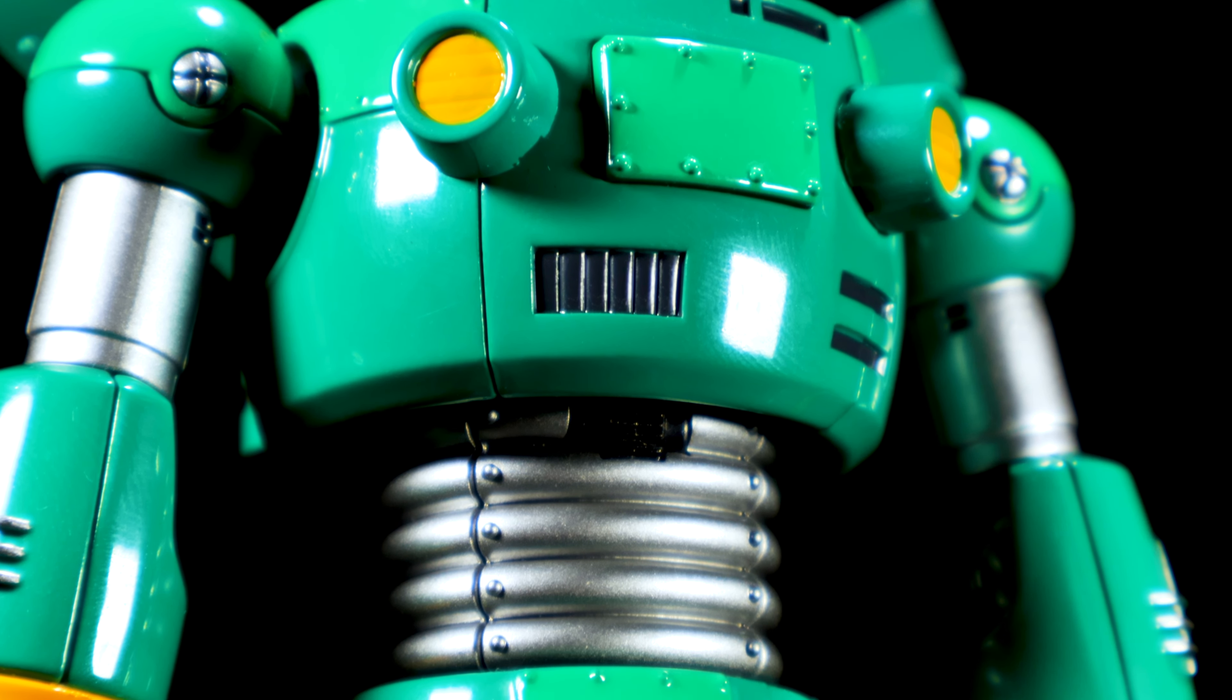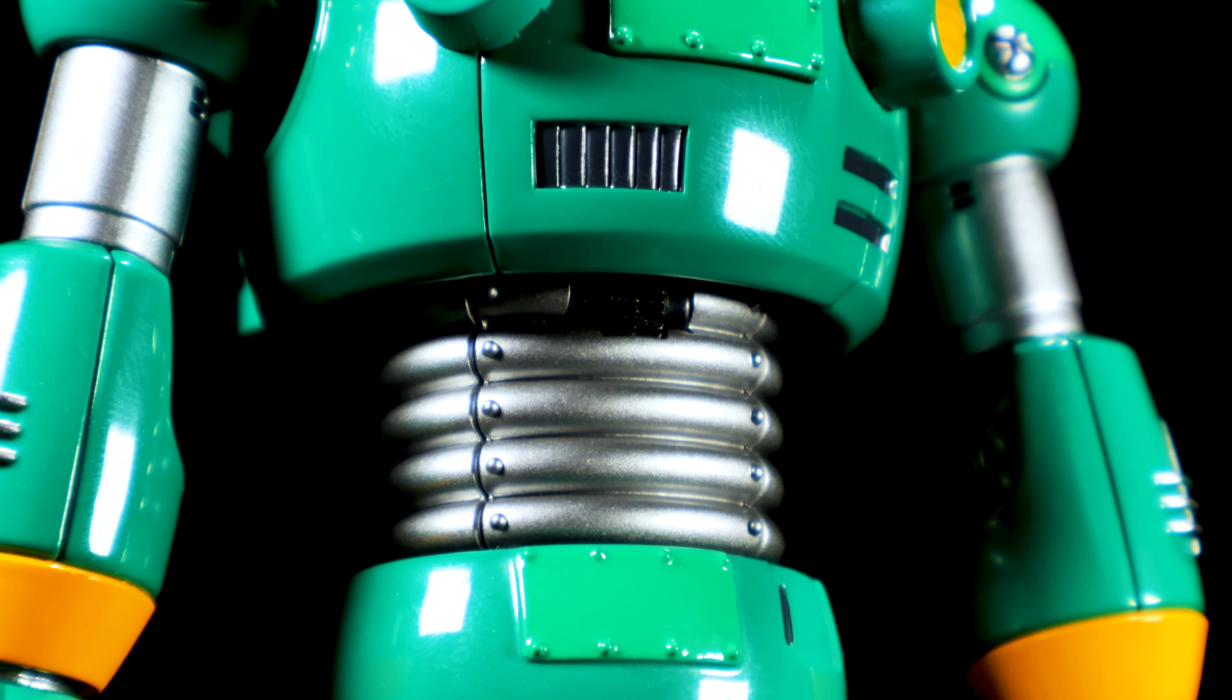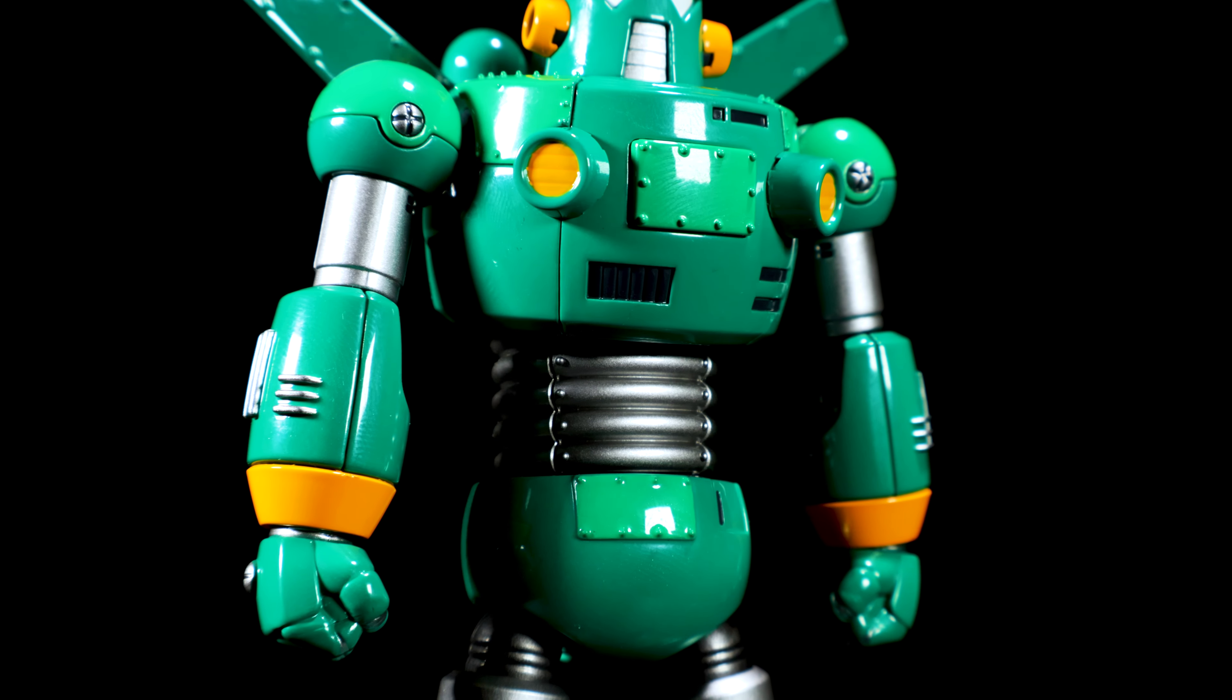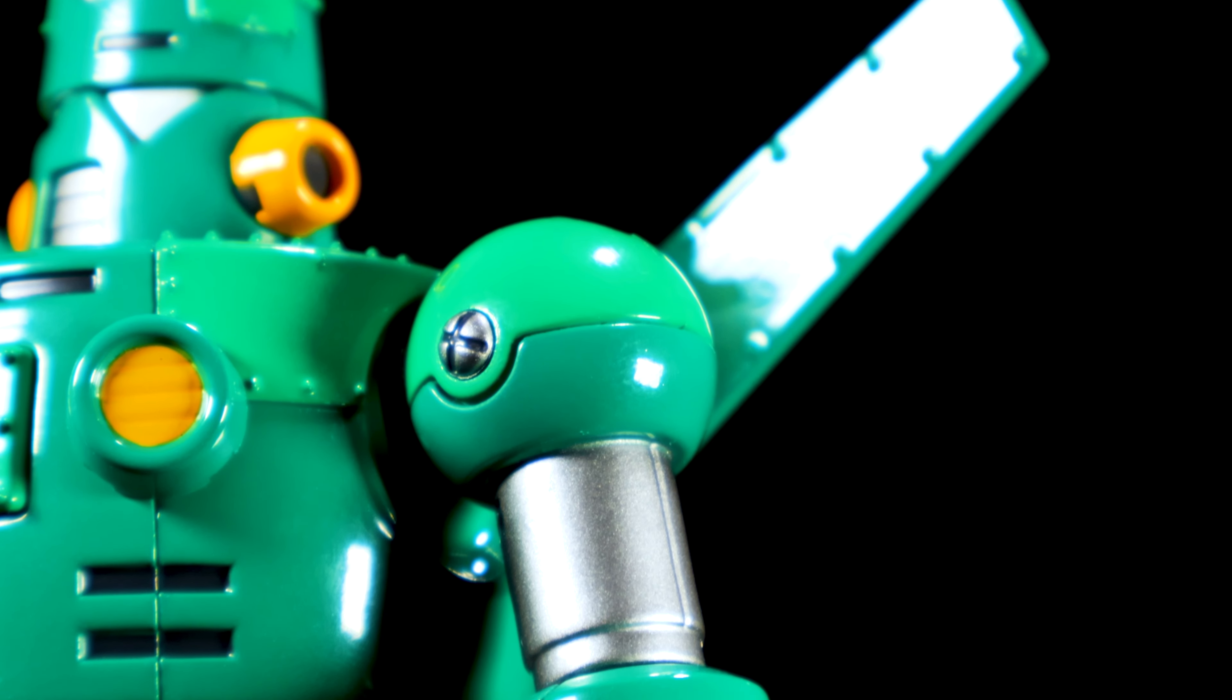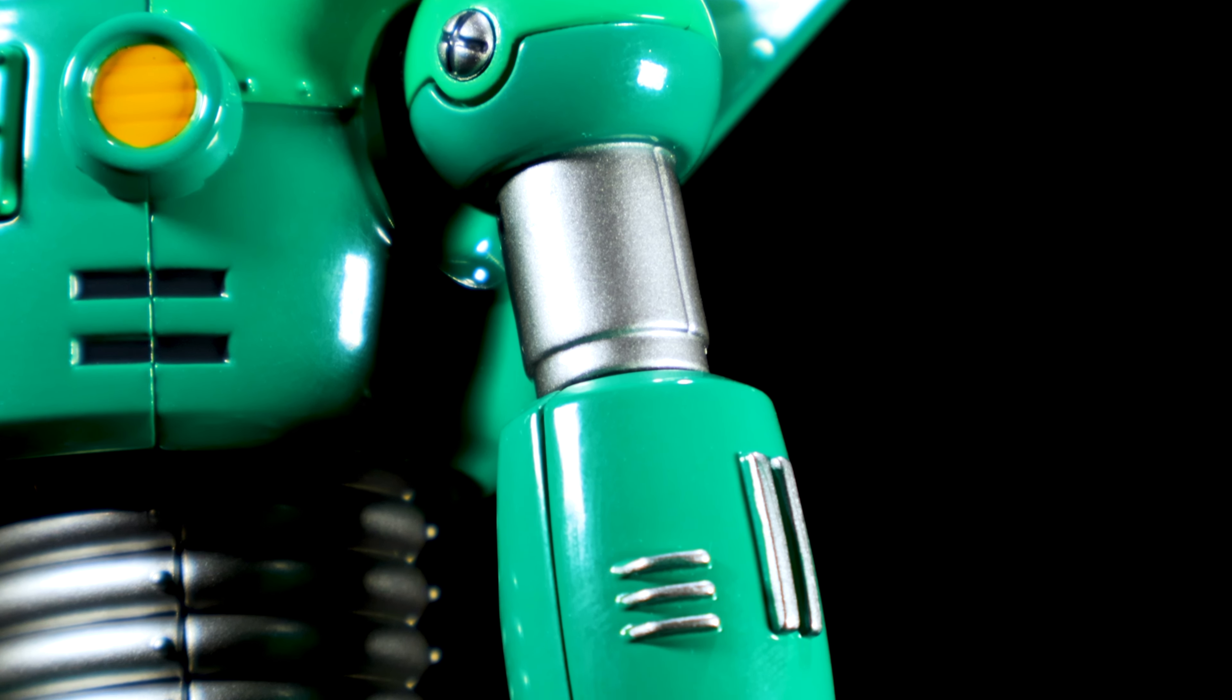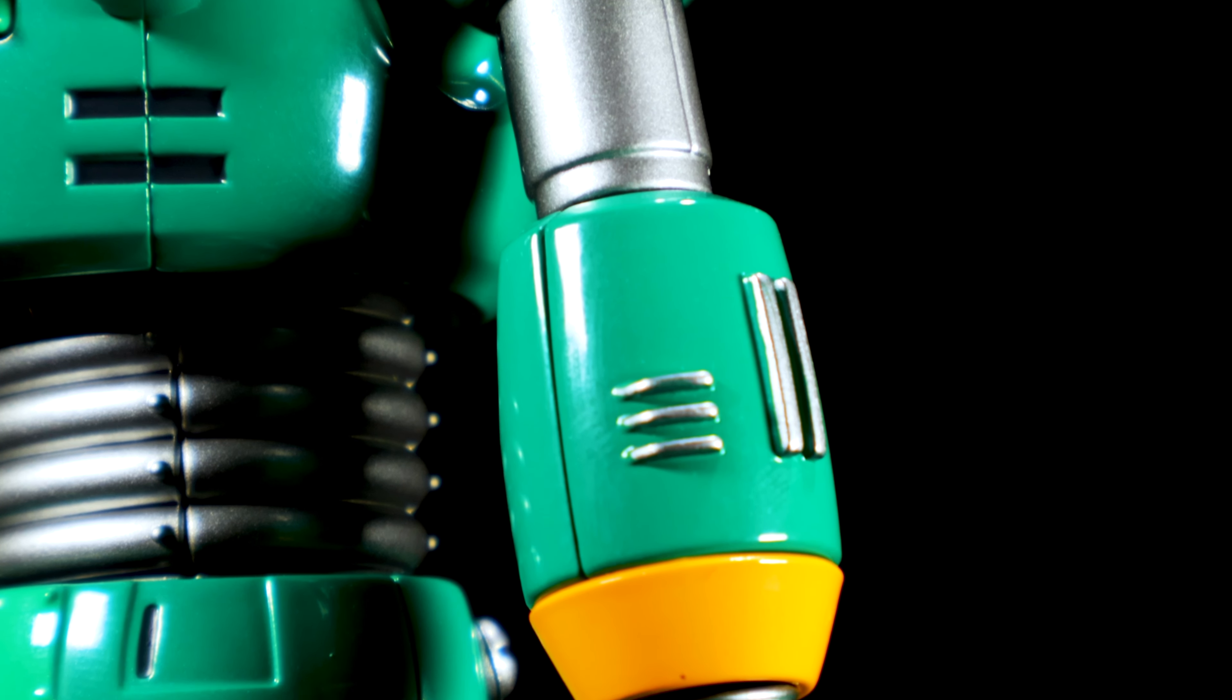The abs have a coiled metallic silver sculpt with rivets going down the sides. The shoulders have a two-tone armored sculpt with metallic silver accents in the center. The arms have a nice sculpt with metallic silver biceps and detailed forearms with metallic silver and orange accents.